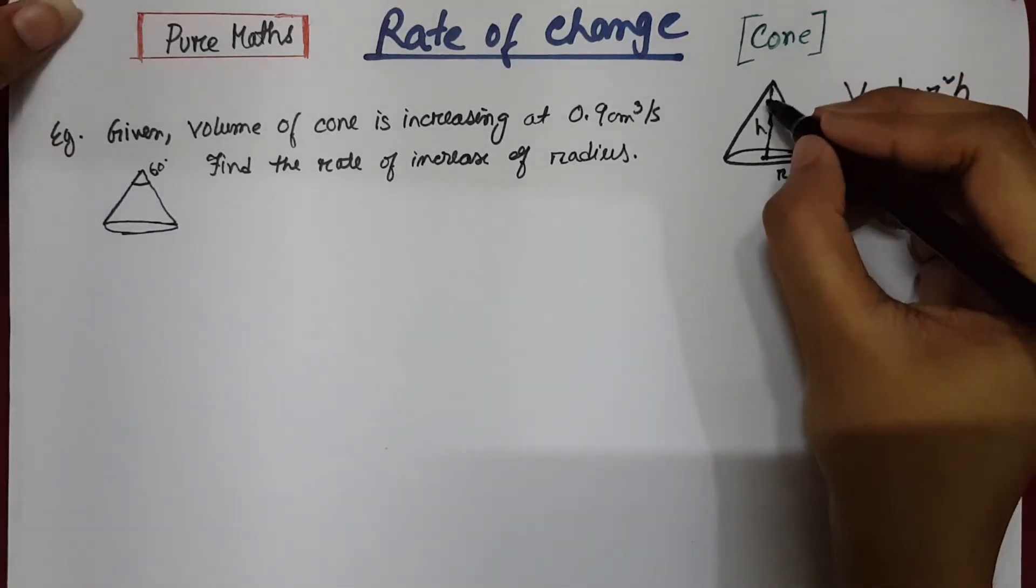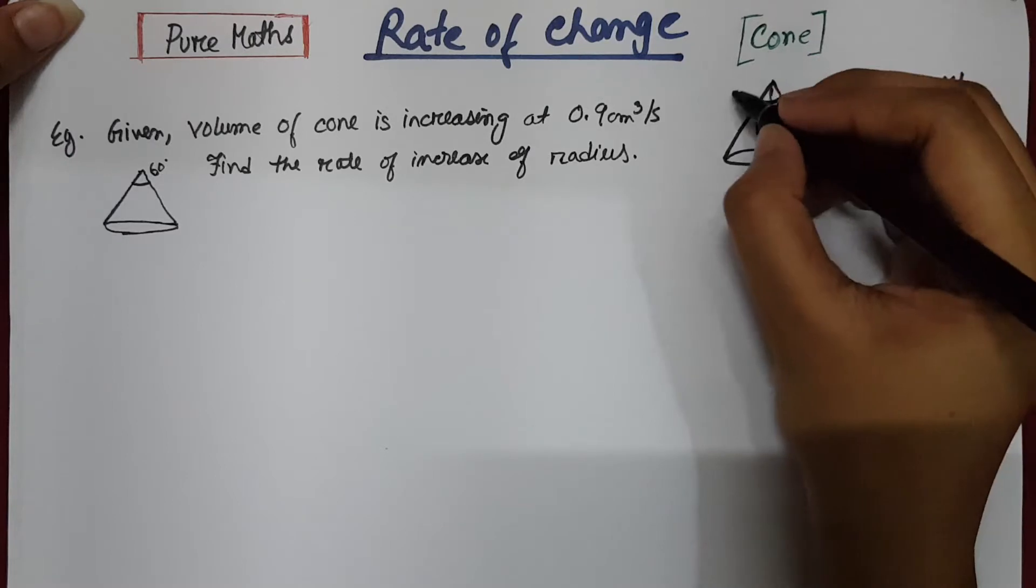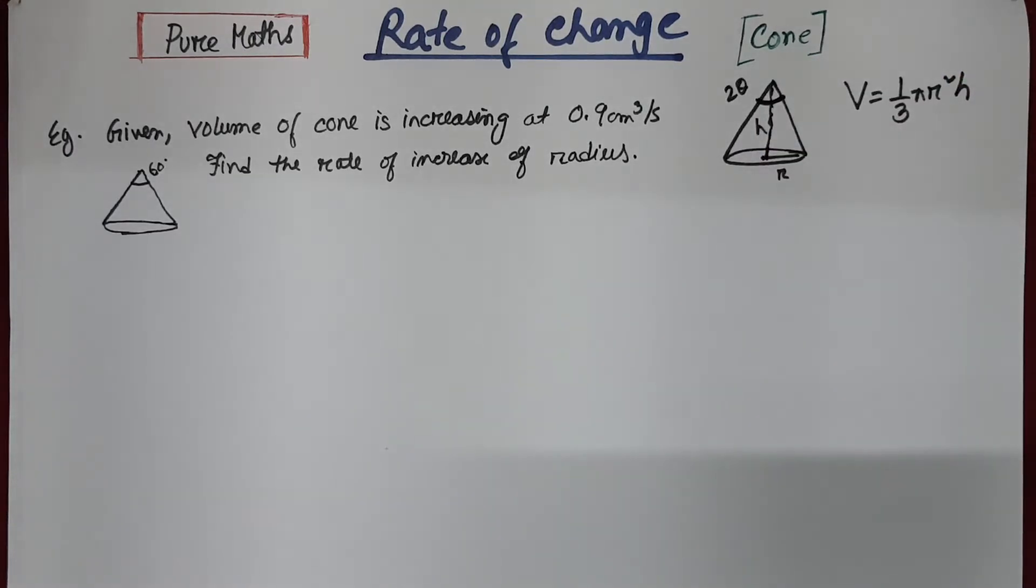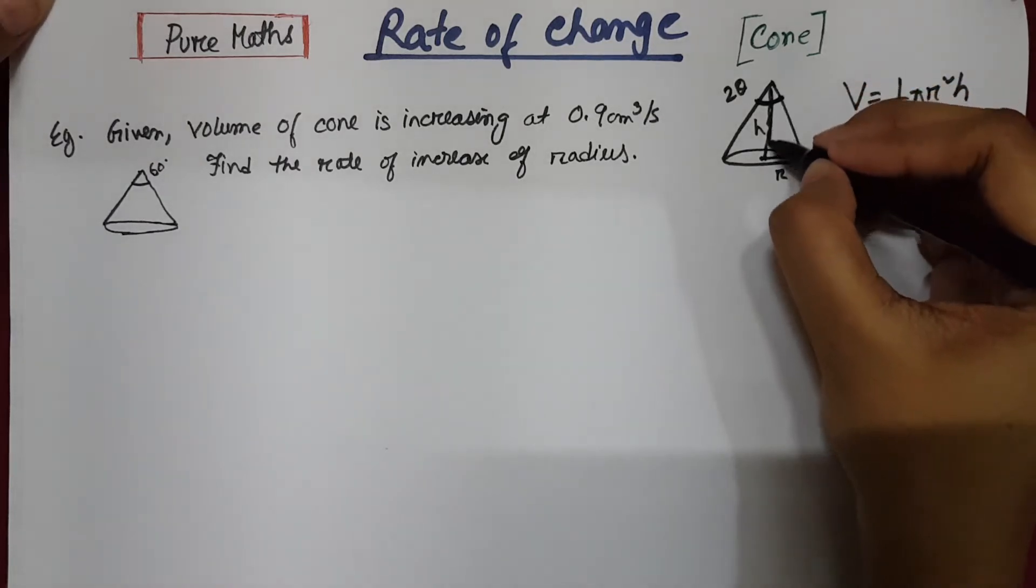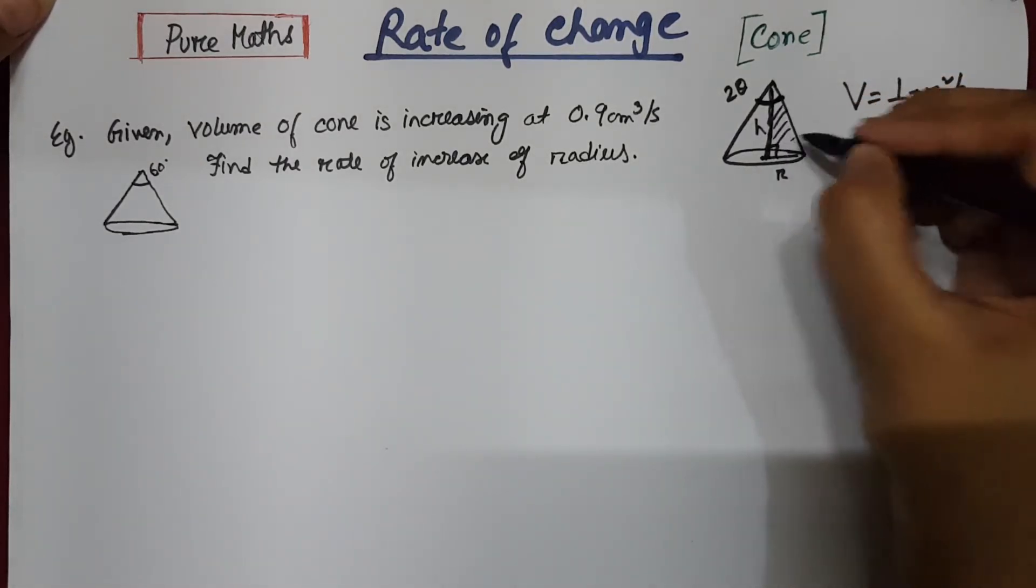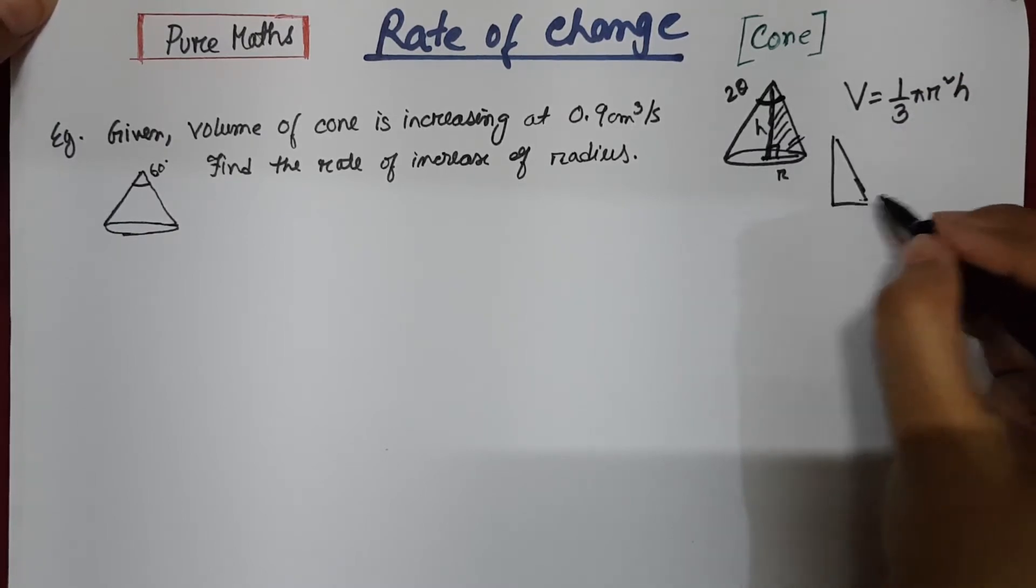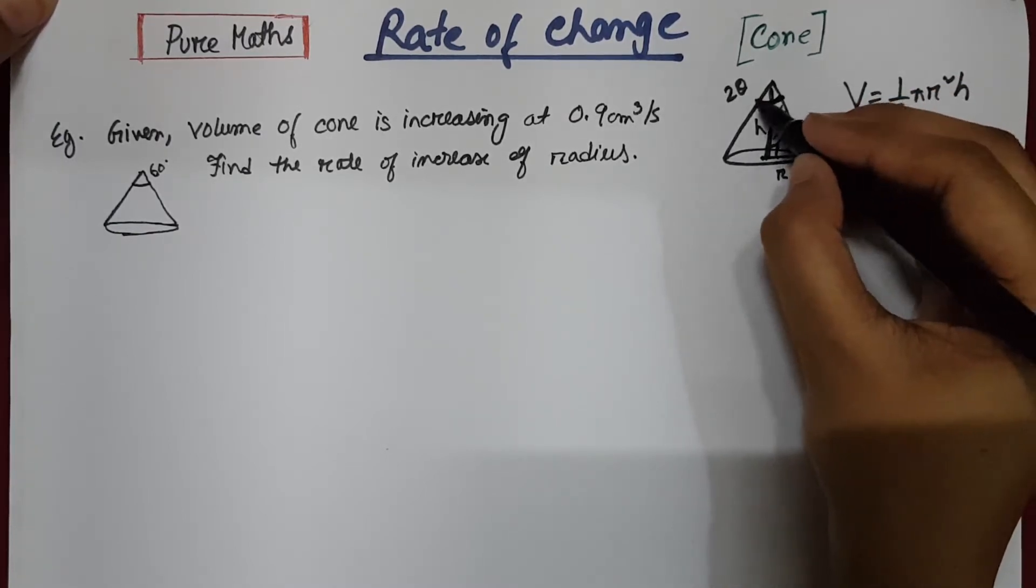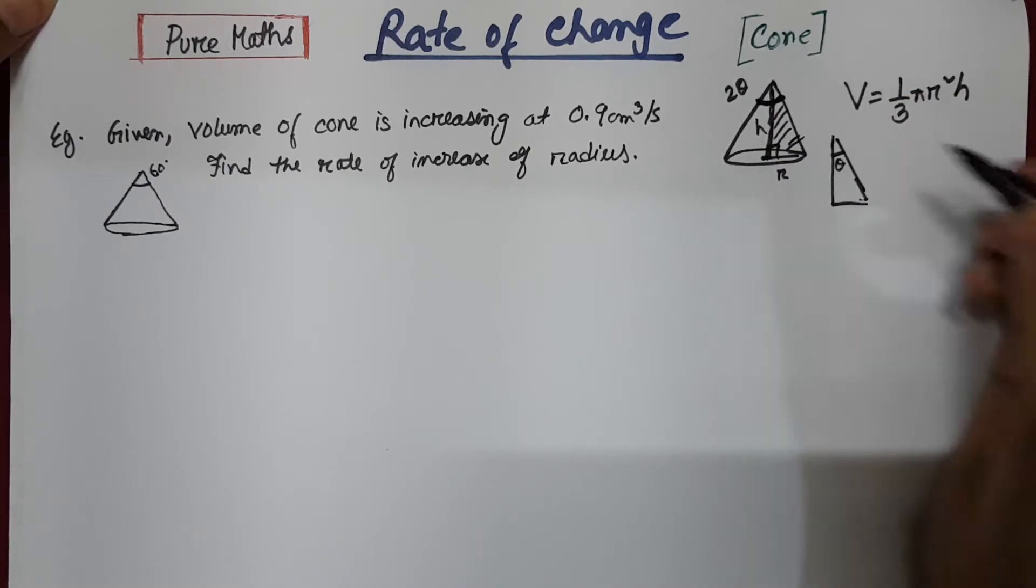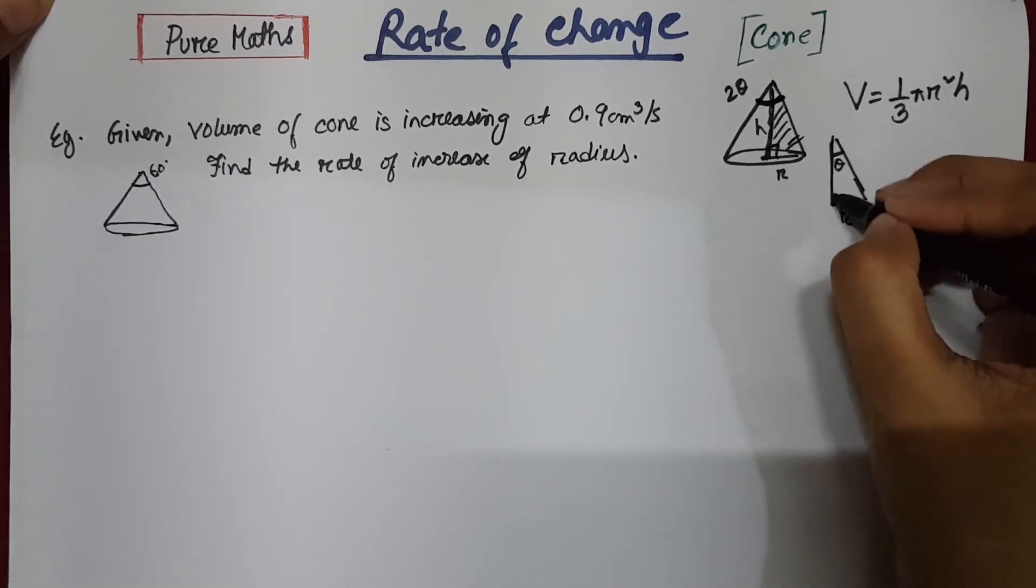So for any cone, if the angle is 2 theta, if it is a right circular cone, then we have a right angle triangle here. If the total angle is 2 theta, this will be theta, this is your radius and that's your height.